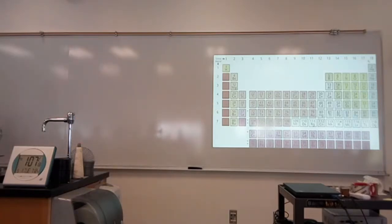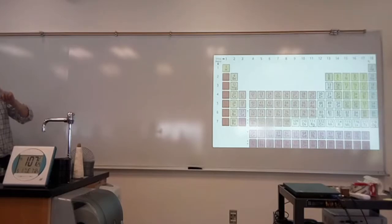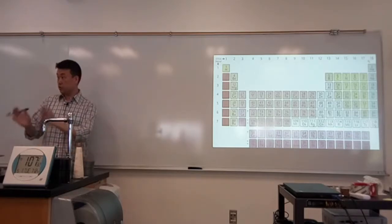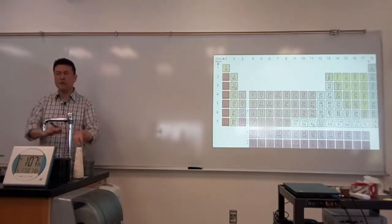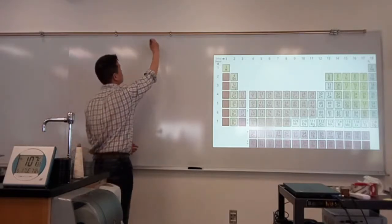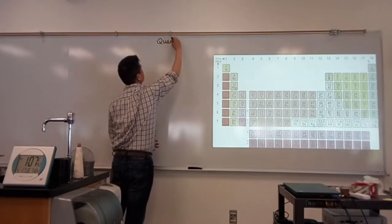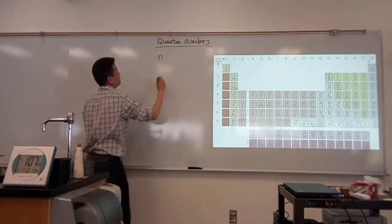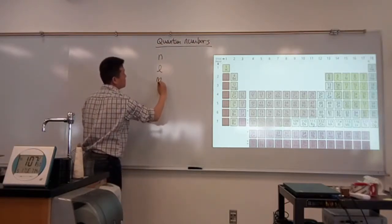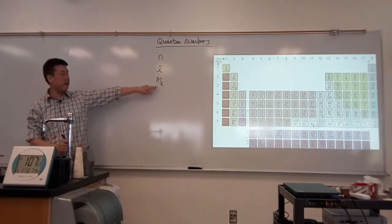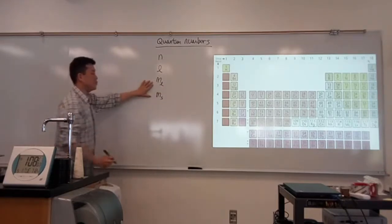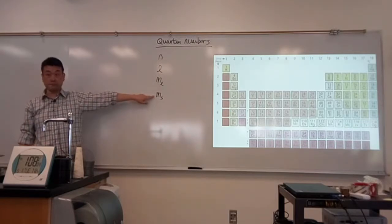These are some key concepts to remind you of from last week. The number one thing is the quantum numbers that characterize any particular state an electron can be in — in a hydrogen atom or really any atom. Those quantum numbers are N, L, M sub L, and M sub S, which is the spin projection.